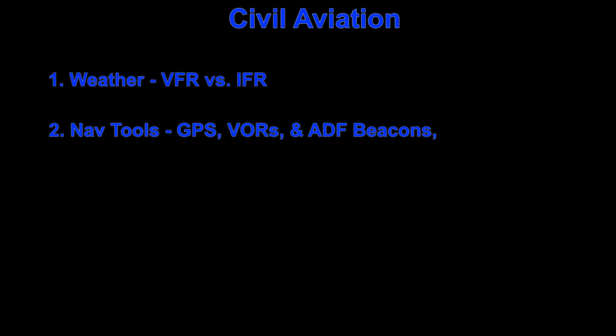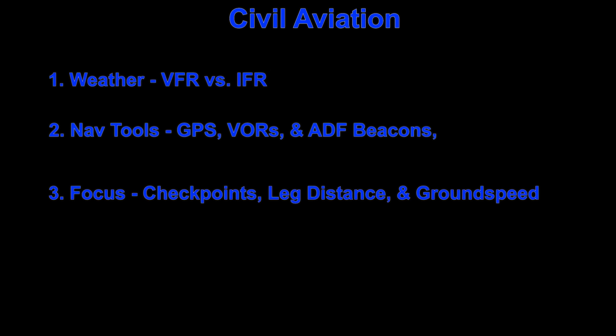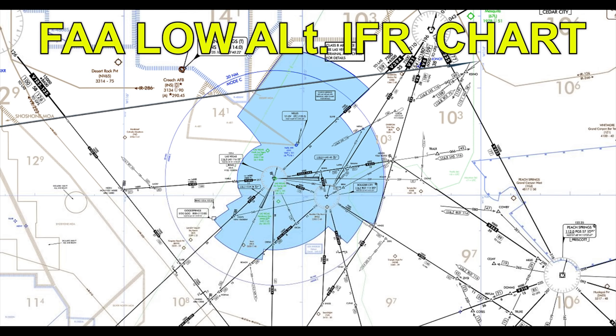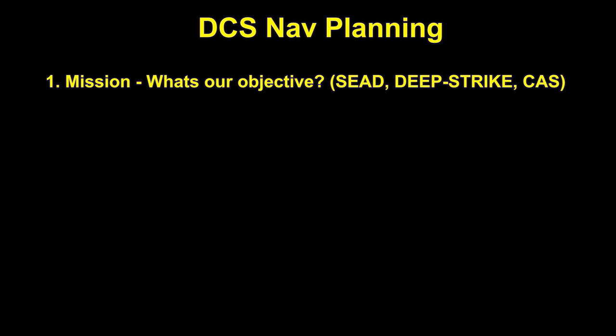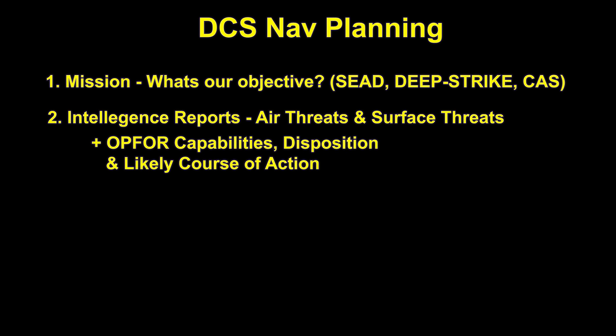In civil aviation, planning factors include weather, VFR versus IFR conditions, and NAV tools such as GPS, VORs, and ADF beacons. In VFR flight, a larger emphasis is on visual checkpoints, distance, and ground speed. The pilot generally prioritizes safety and redundancies when selecting a NAV route. For us in DCS, the essential factors are mission — what's our objective — the intelligence on ground threats, air threats, enemy disposition and capabilities, and likely response.